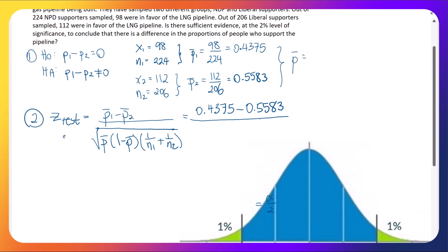We need to get P bar as well. So P bar is going to be the 98 plus the 112, taking the two number of successes, divided by the total number in each group. So 224 plus 206 on the bottom, and that gives us 0.4954. That's our P bar, and that goes into the square root piece.